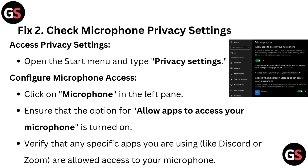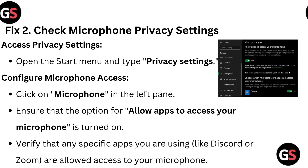Fix 2: Check microphone privacy settings. Open the Start menu and type privacy settings. Click on microphone in the left pane. Ensure that the option to allow apps to access your microphone is turned on. Then verify that any specific app you are using, like Discord or Zoom, is allowed access to your microphone.